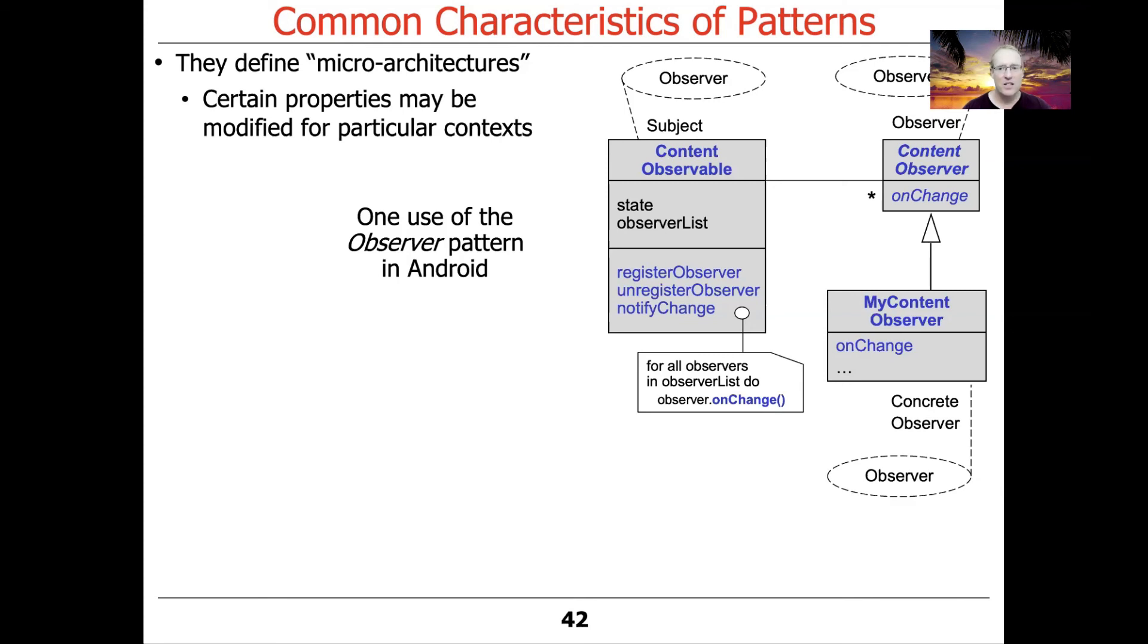In the rectangles, you can see the names of the Android classes like content observer and content observable. And then you can also see these little lasso-like ovals that are dashed that show the mapping of those concrete classes onto the various roles and responsibilities in the observer pattern. So those map from the concrete reification or instantiation in Android back onto the generalizable concepts that are documented in the Gang of Four book.